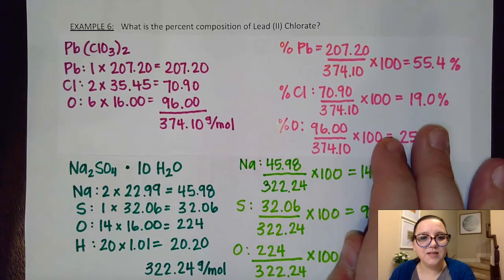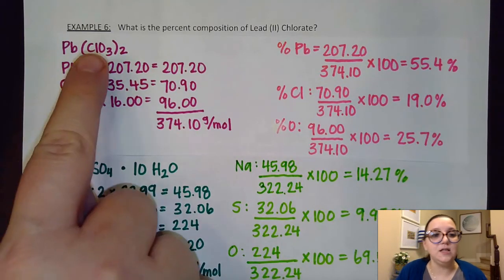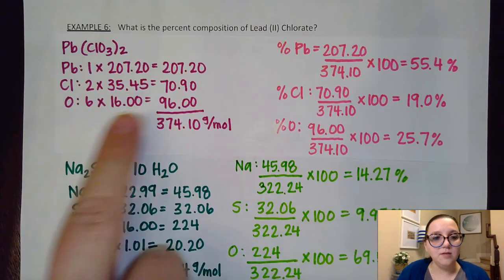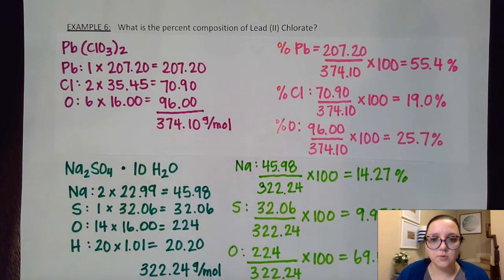So first off, the lead to chlorate is Pb(ClO3)2. So again, formula writing strikes again. Super important here. I added up all of my substances in there to get my total molar mass. And then here's what I got for my percentages. Now, you notice here that I only did one place past the decimal, but you should still add up really close to 100.